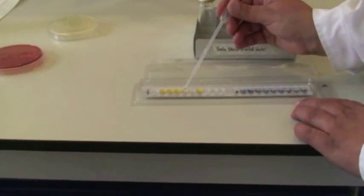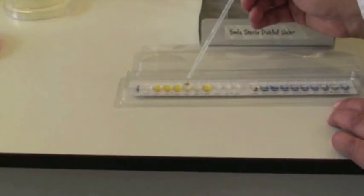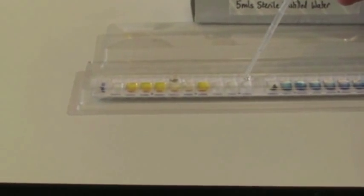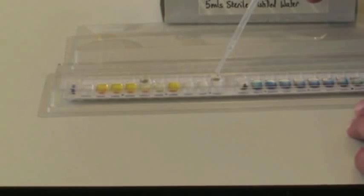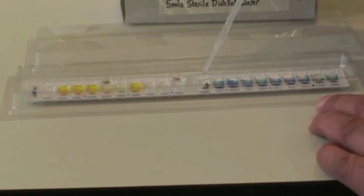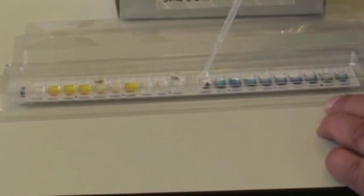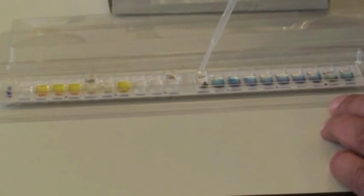Topping up the citrate cupule with some more bacterial suspension, topping up your VP with some more bacterial suspension, then topping up your gelatin with some more bacterial suspension.